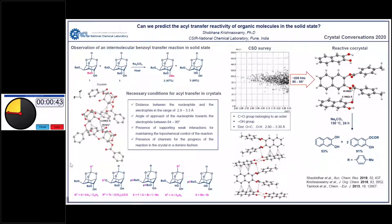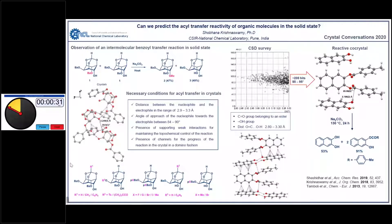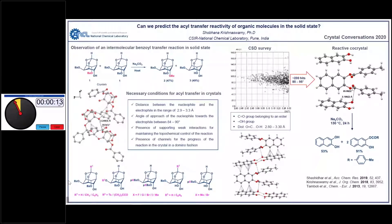When these crystals were heated with sodium carbonate, we found that para-acyl group migration occurs, yielding the dione and the monoester almost quantitatively. This proves that we can indeed select crystals from the database and predict the acyl transfer reactivity of an organic molecule by looking at its molecular packing and the primitive orientation of potentially reactive centers. You can read more about this in the Accounts of Chemical Research or CTOC paper. Thanks to the organizers for the opportunity, and please write to me if you'd like to know more.